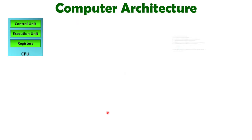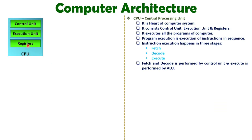When we talk about computer architecture, it has a heart that is the CPU, and the CPU is used to execute instructions. When we talk about program execution, a program is a set of instructions. The entire program is not executed simultaneously — one by one, instructions are executed by the CPU. The CPU is having three major elements: control unit, execution unit, and registers.